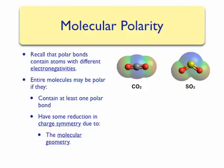If we look at the electrostatic potential map for sulfur dioxide, we notice that one end of the molecule towards the sulfur, which is less electronegative than the oxygens, is blue, while the map appears to be more red towards the oxygens. This asymmetry in the charge distribution in the molecule makes sulfur dioxide a polar molecule.